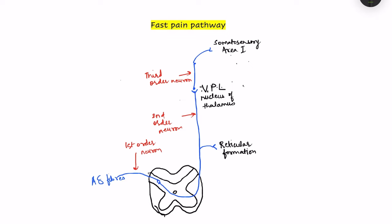The body has mechanisms to change the intensity of pain which we perceive, and that is given by gate control theory and the descending analgesic pathway. In brief, we'll first see the pain pathways and then move on to these theories.